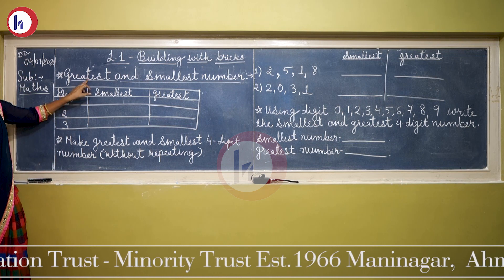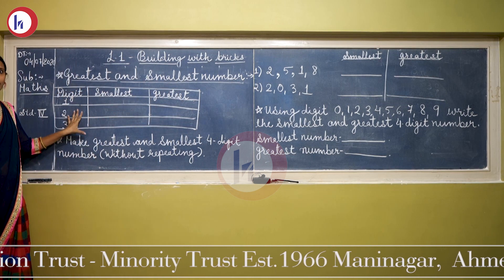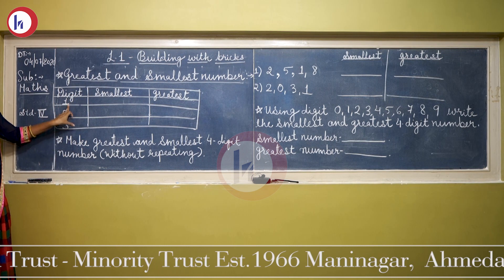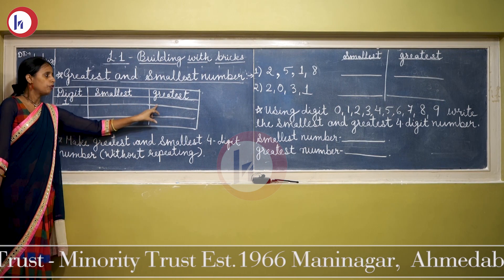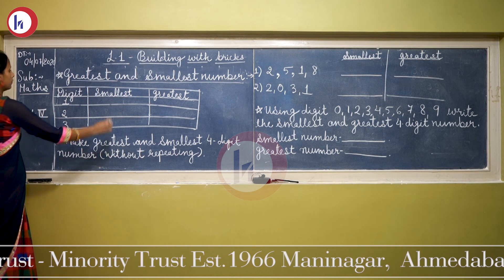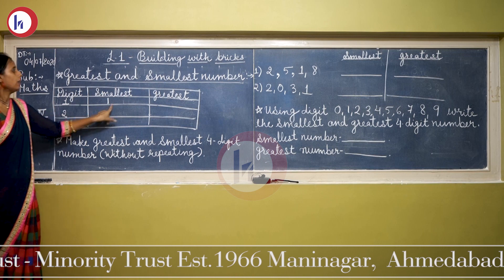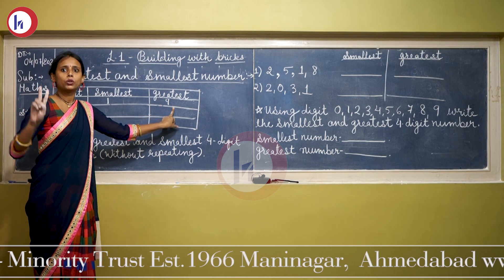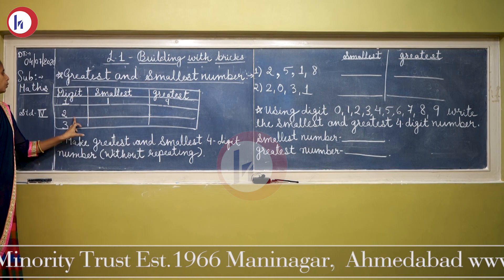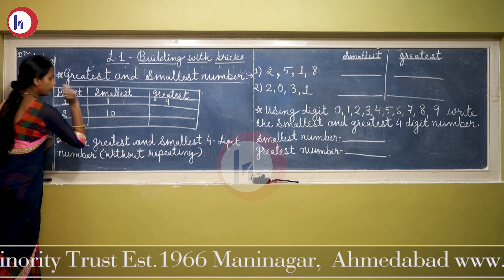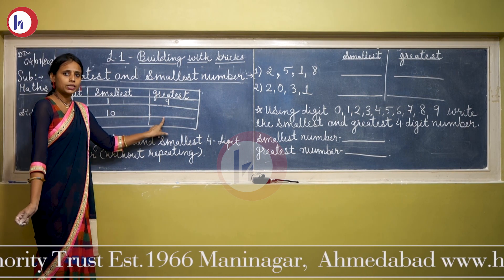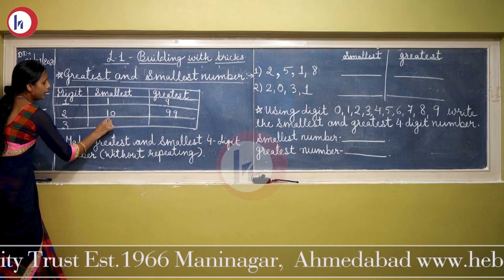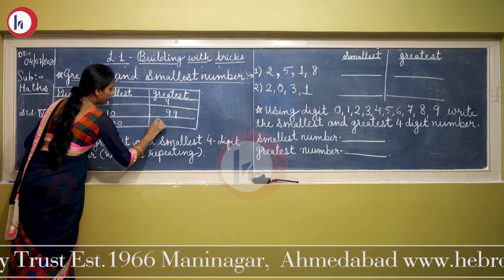Let's start our next topic: greatest and smallest numbers. In this topic we will learn how to make the smallest and greatest numbers from any given digits. For 1-digit numbers, the smallest is 1 — we can't start with 0 — and the greatest is 9, because if we write 10 it becomes a 2-digit number. For 2-digit numbers, the smallest is 10 and the greatest is 99. The 3-digit smallest number is 100 and the greatest is 999.